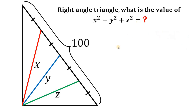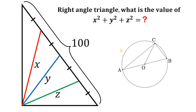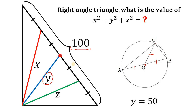To answer this question, we will use two concepts. The first one is that any right triangle can be placed inside a circle. If we do that, the center of the circle must be the midpoint of the hypotenuse. Therefore, if we connect the other vertex to the center of the circle, it must be the length of the radius — meaning OA equals OB equals OC. Referring to our figure, y must be half of the hypotenuse, which is 100, so half of 100 equals 50. Therefore, y equals 50.